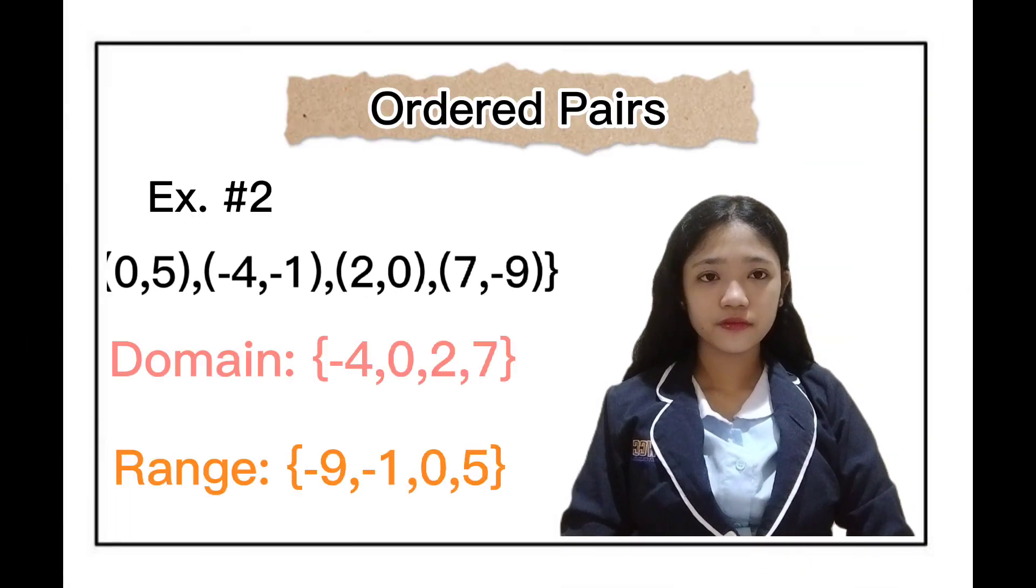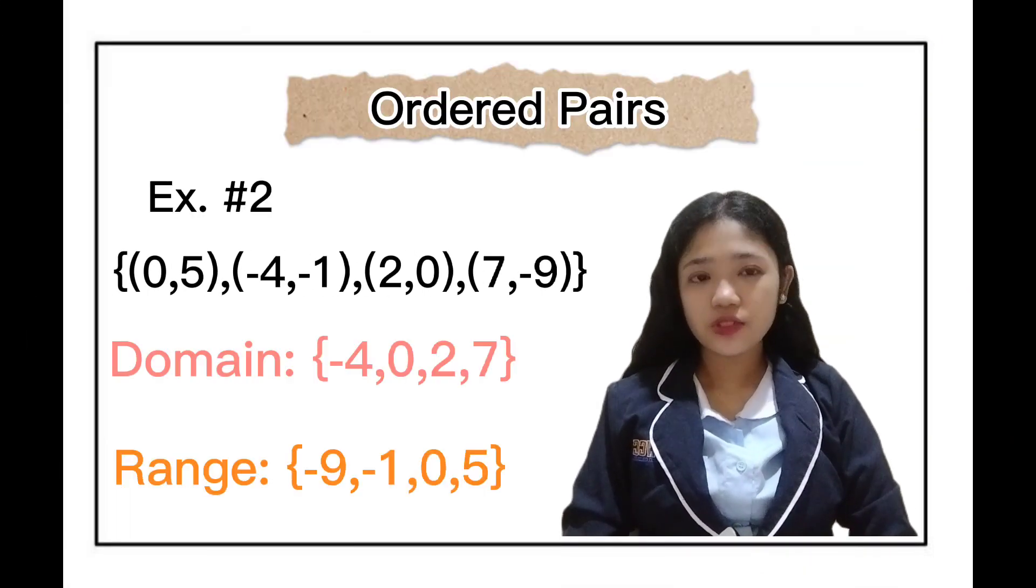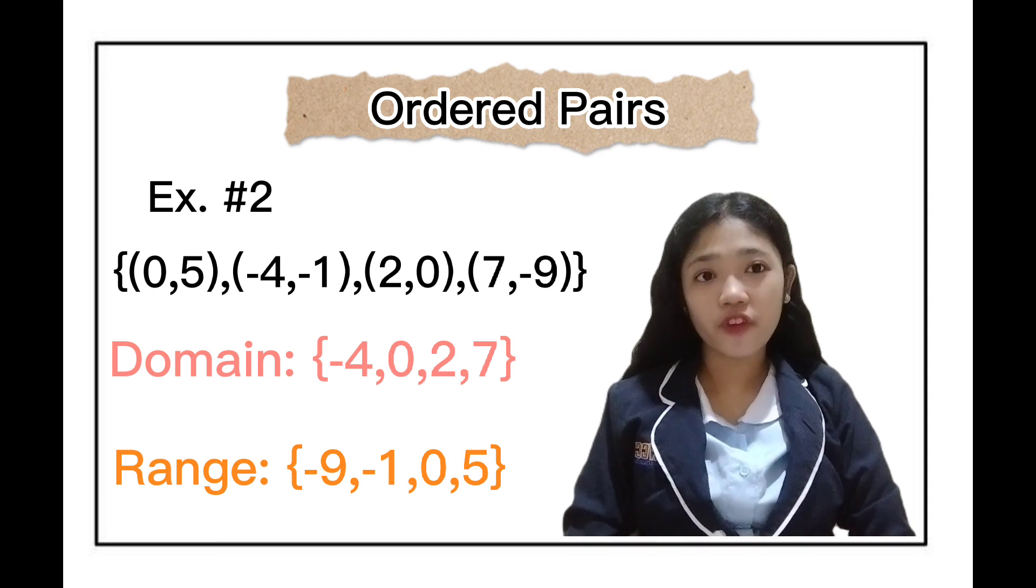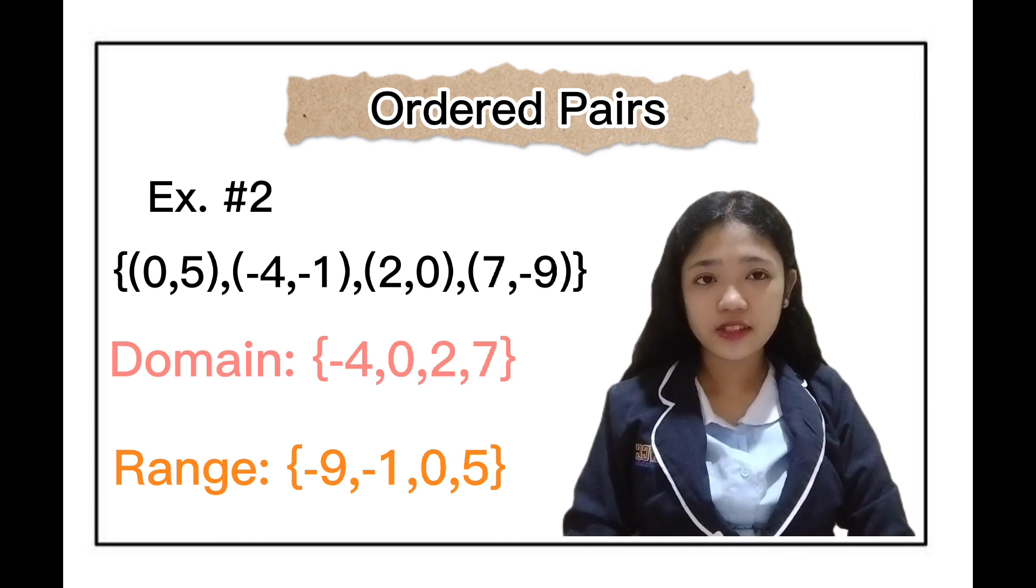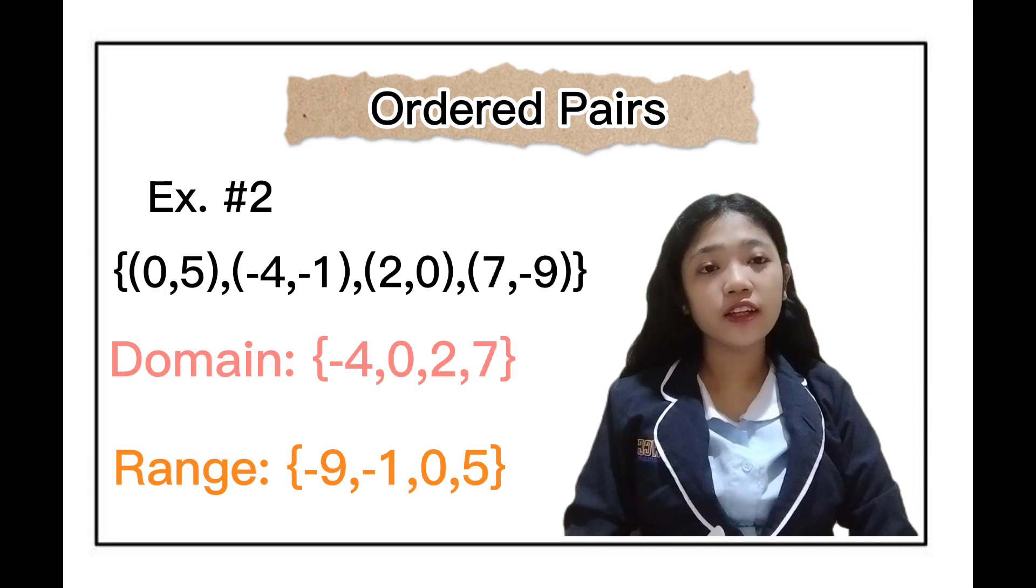Now let's have another example. The domain is negative 4, 0, 2, and 7. The range is negative 9, negative 1, 0, and 5.